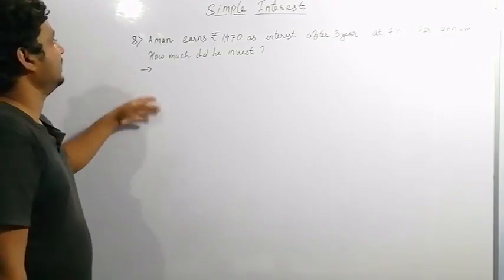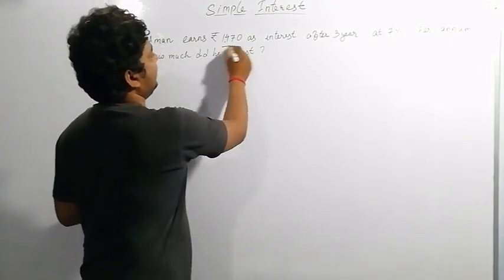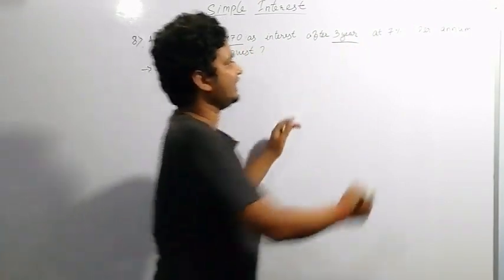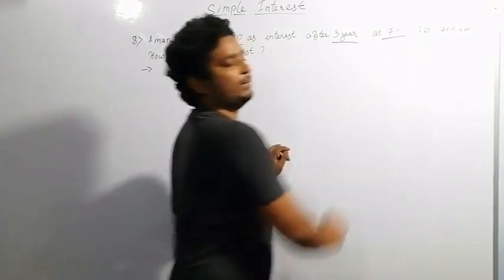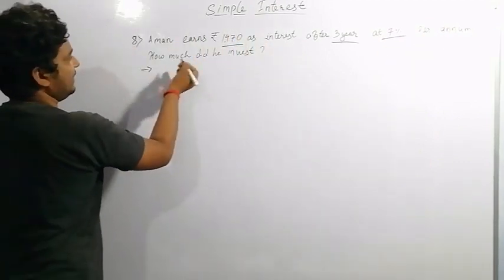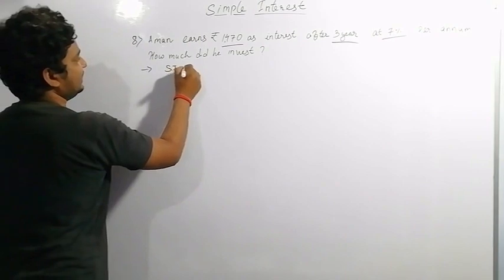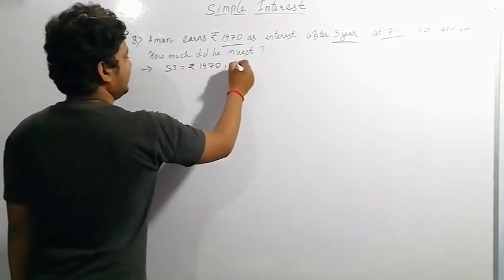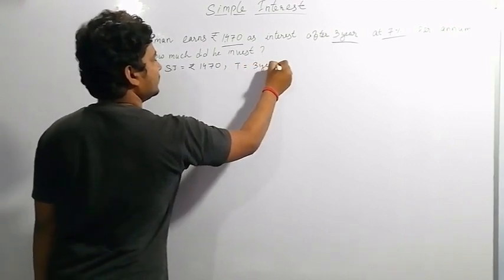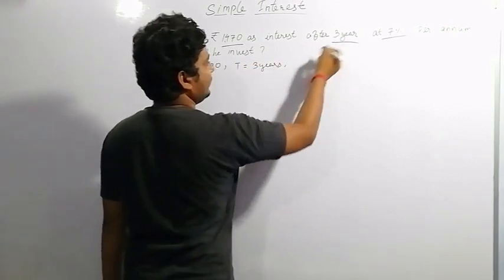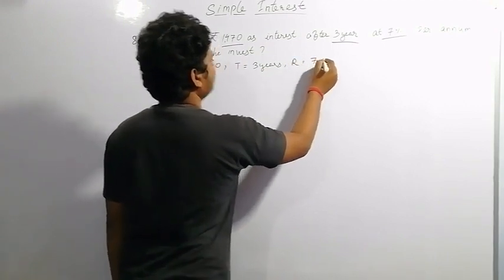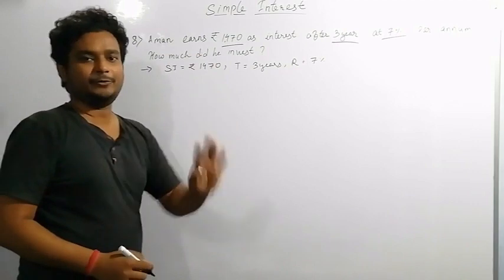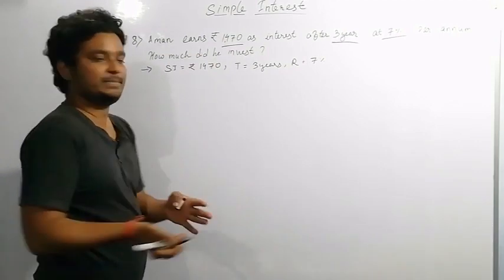Coming to question number 8. An amount earns rupees 1,470 as interest after 3 years at 7% per annum. The given data is: SI equals rupees 1,470, time equals 3 years, rate equals 7%. We have to find how much was invested, which means we need to find the principal.